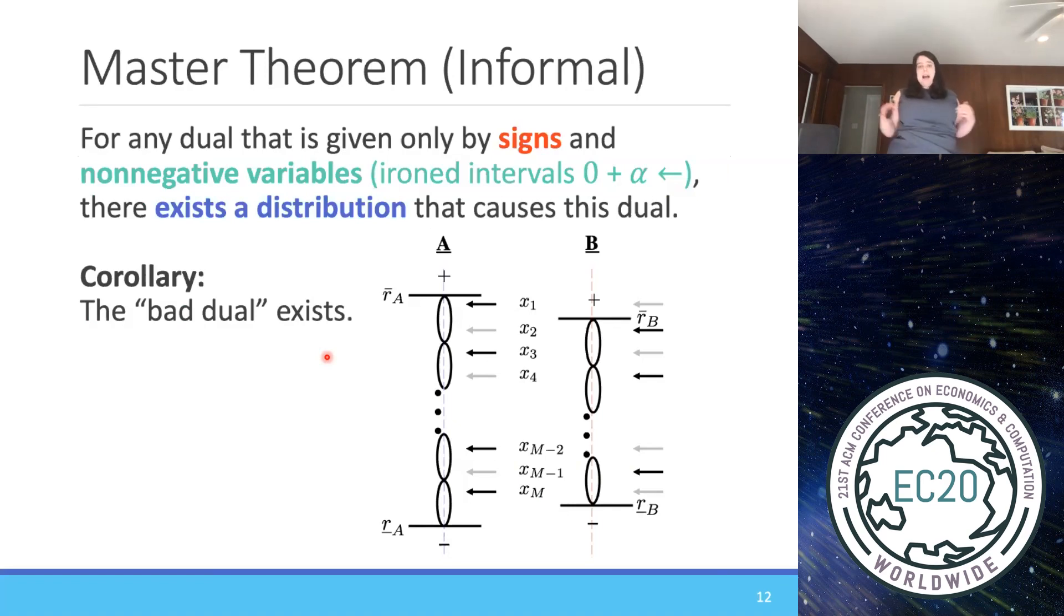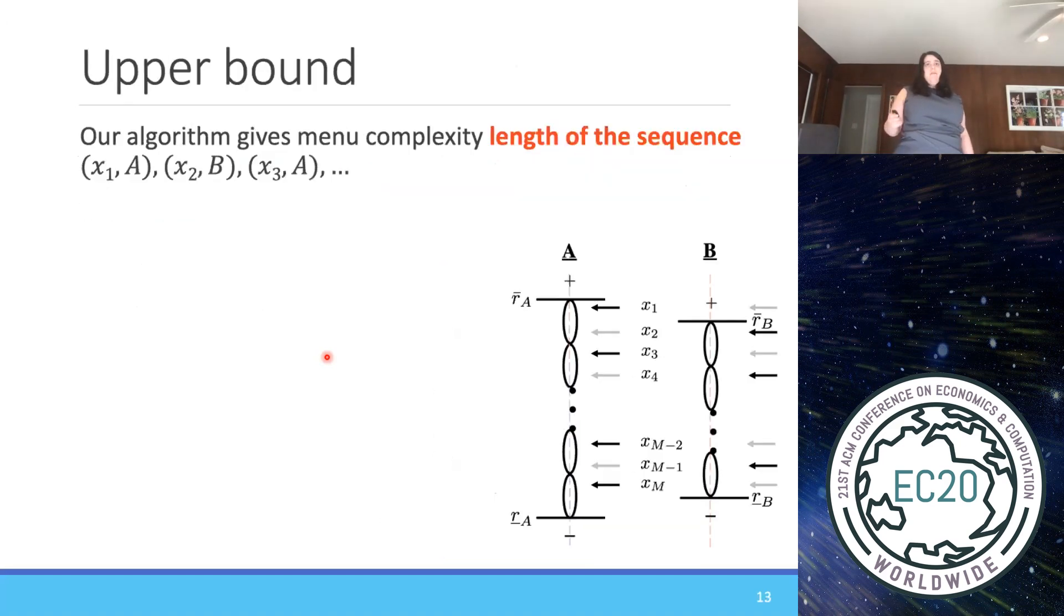Now, what I didn't tell you is why there is some distribution that admits a dual like this. I just talked in terms of what the dual looks like, but I didn't talk in terms of what the buyer distribution is. The other thing that we do is we come up with this master theorem that basically says you can just work with the fun dual part, we'll deal with the messy distribution part for you, and it says that any dual that's just given in terms of signs and non-negative variables has some distribution that admits it. So we did all the messy part with the distributions, the dual exists. That's what the master theorem says.